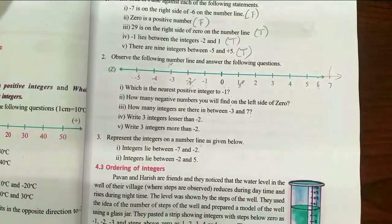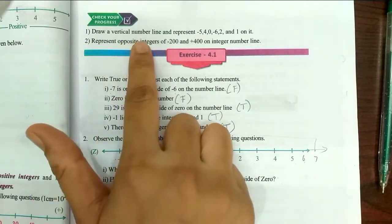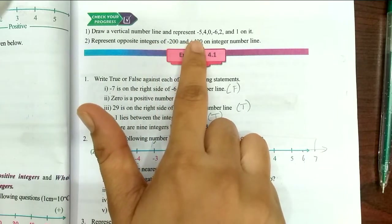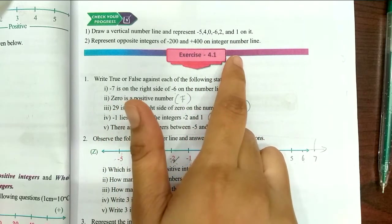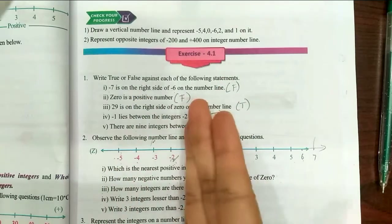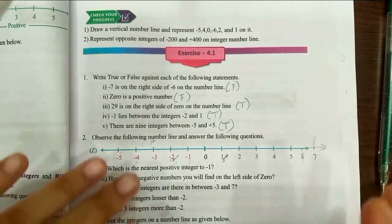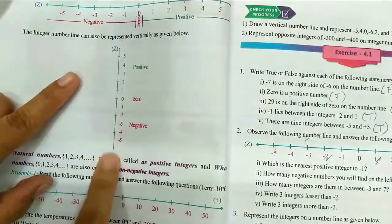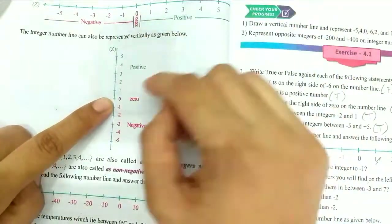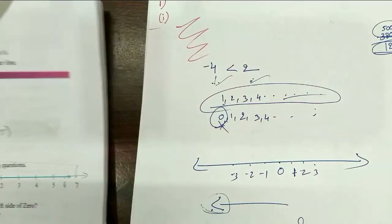Next, check your progress: draw a vertical number line and represent minus 5, 4, 0, minus 6, 2, and 1 on it. On a horizontal number line, 0 is at center, left side is negative and right side is positive. But now we use a vertical number line — above 0 is positive and below 0 is negative.